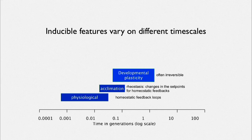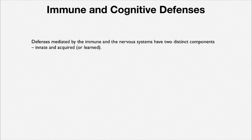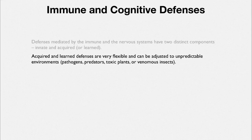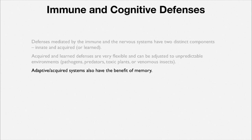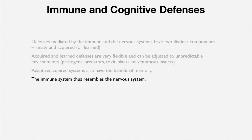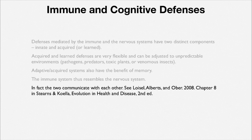We also have special issues with immune and cognitive defenses. Interestingly, not only do the immune system and the central nervous system communicate with each other, but they share some design features. Defenses mediated by both systems have an innate and an acquired component. Acquired and learned defenses are very flexible — they can be adjusted to unpredictable environments, pathogens, predators, toxic plants, and venomous insects — and they have the benefit of memory. Both the immune system and the central nervous system can remember.